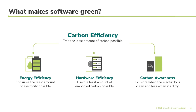There are basically three pillars of green software, and they all stem from something called carbon efficiency. Everything we do in life, we emit carbon — I'm breathing right now and emitting carbon into the atmosphere. Our applications are always going to emit carbon, so our goal is carbon efficiency: to emit the least amount of carbon possible. There are really just three things you can do to make your application greener: energy efficiency, hardware efficiency, and carbon awareness.